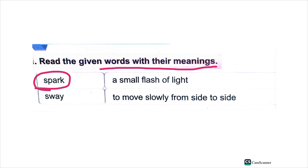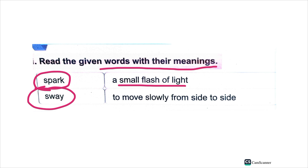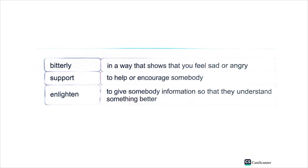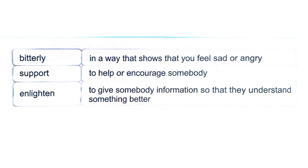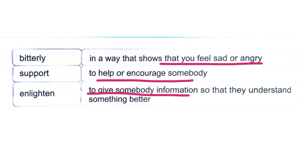Now let's look at some word meanings. 'Sway' means to move slowly from side to side. 'Sulk' means to feel sad and angry. 'Support' means to help or encourage somebody. 'Enlighten' means to give somebody information so that they can understand something better.